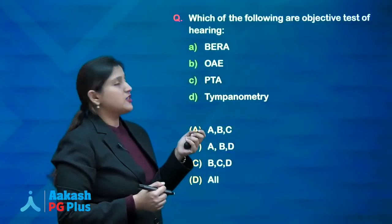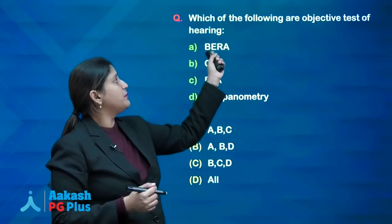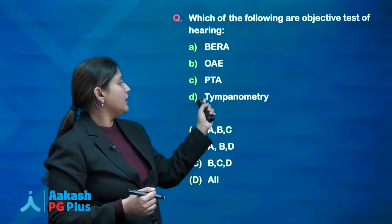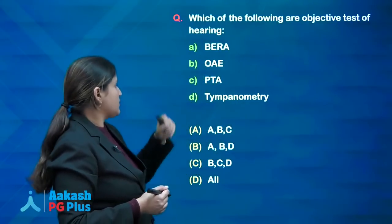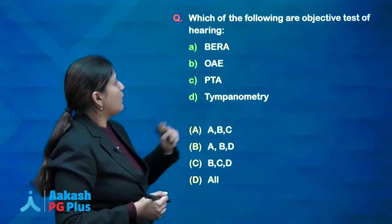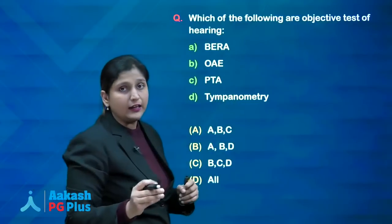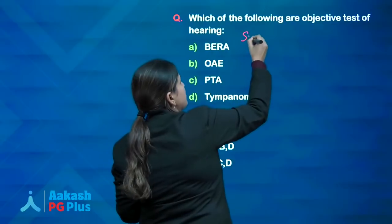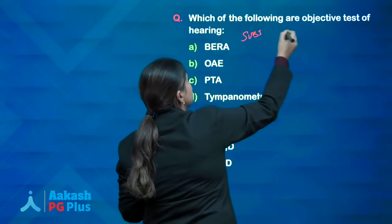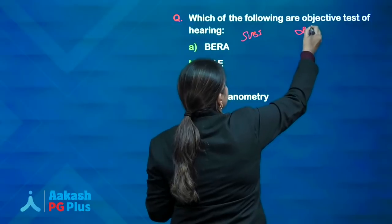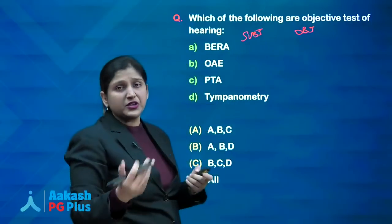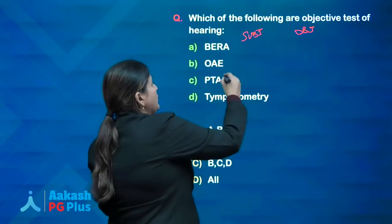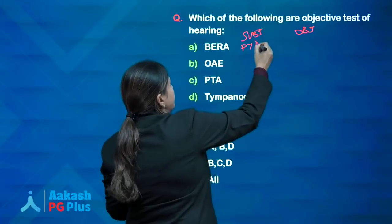Which of the following are objective tests of hearing? The options are: brain evoked response audiometry (BERA), OAE (otoacoustic emissions), pure tone audiometry, and tympanometry. Tests of hearing are divided into objective and subjective tests. Subjective tests are those where the patient's response influences the result — pure tone audiometry is a subjective test where the patient indicates when they can hear sound.